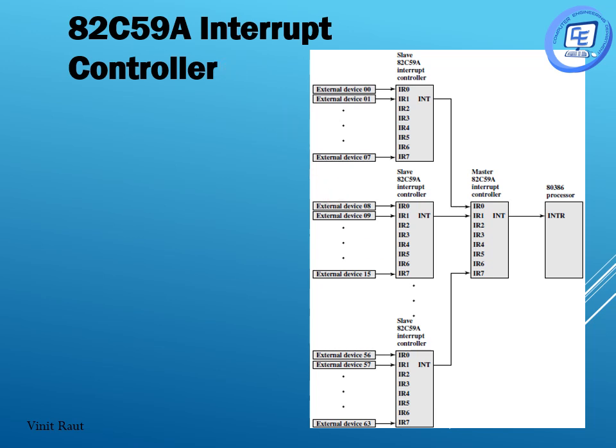This is the interrupt driven IO data transfer technique. It has a slight advantage over programmed IO — the CPU does not continuously check the IO module status. Instead, the IO module sends an interrupt signal once it is ready, and the CPU only checks at the end of each instruction cycle. But the CPU is still involved in the data transfer, so the better method is DMA.